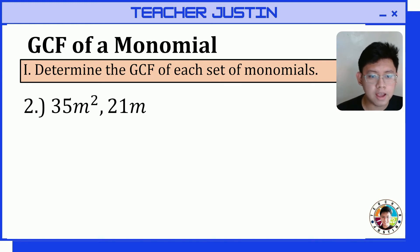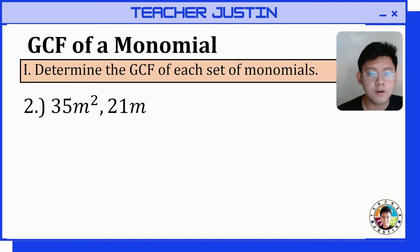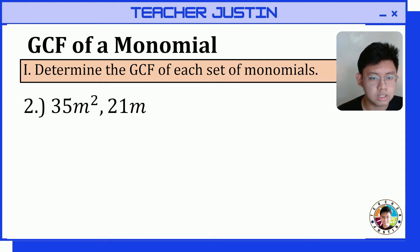Let's proceed to item number 2. Let's determine the GCF of 35m squared and 21m. Our first step in getting the GCF is to get the prime factors of our monomials.